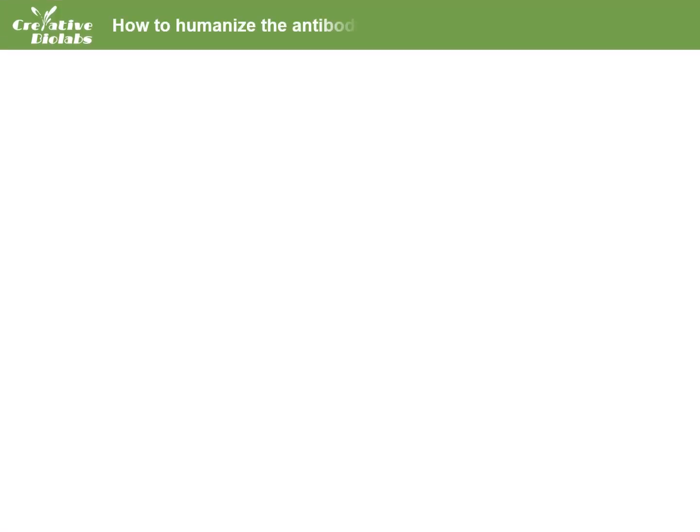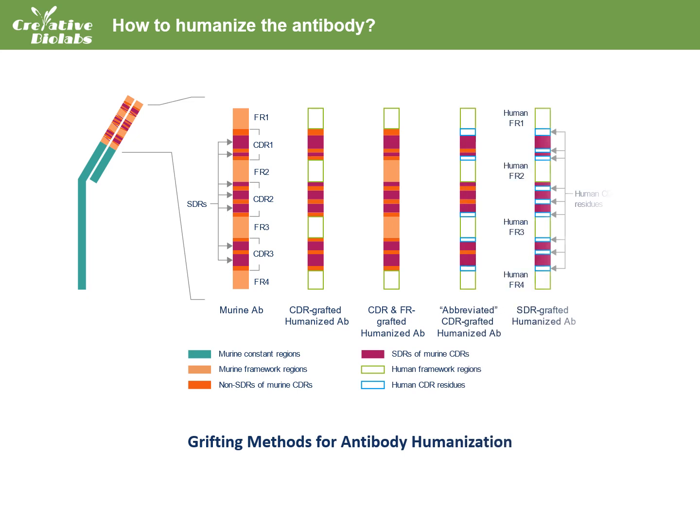The most widely applied methods for producing partially humanized antibodies are the grafting methods. The most used CDR grafting method clones the complementary determination regions, or CDRs, of mouse monoclonal antibody into the corresponding regions of human antibody to completely or partially replace the CDRs of human antibody, resulting in a CDR grafted antibody. The framework regions, or FRs, can also be optionally cloned together with the CDRs into the corresponding regions of human antibody to hold the correct formation of the variable regions of mouse antibody.